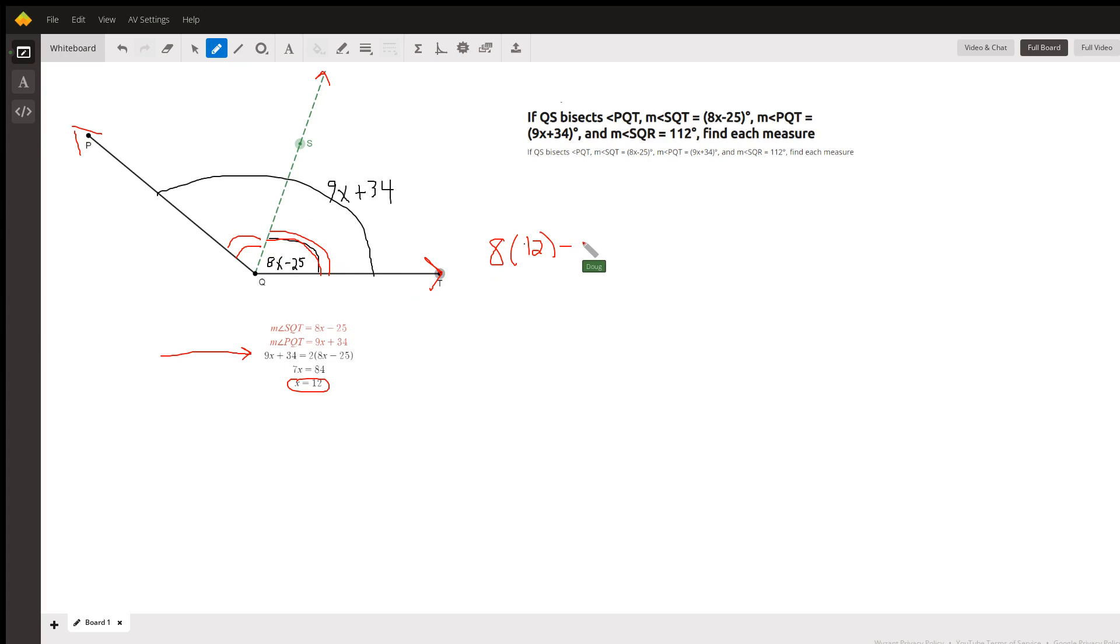So if this is 71 degrees, so is this angle. And so it better be the case, if we put 12 in here for x, that we get 142. And we do: 9 times 12 is 108, 108 plus 34 is 142.